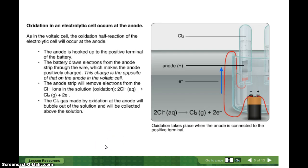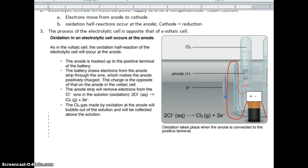Oxidation in an electrolytic cell occurs at the anode. As in a voltaic cell, the oxidation half-reaction of the electrolytic cell will occur at the anode. The anode is hooked up to the positive terminal of the battery. The positive terminal determines the anode — this is the opposite of a voltaic cell. The battery draws electrons from the anode strip through the wire, which makes the anode positively charged. This charge is the opposite of that of the anode in the voltaic cell.